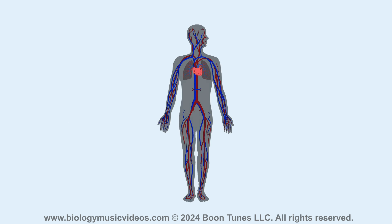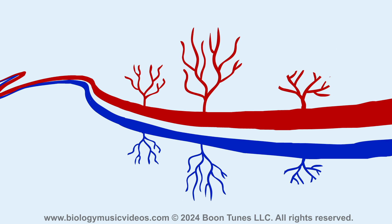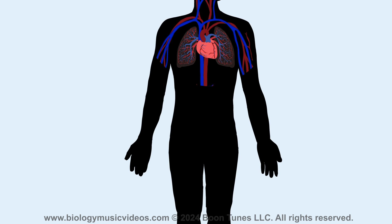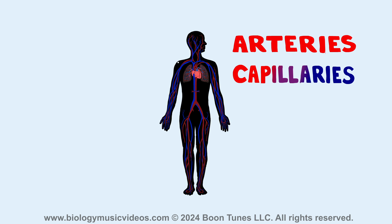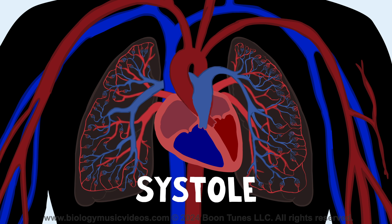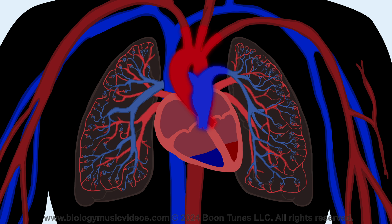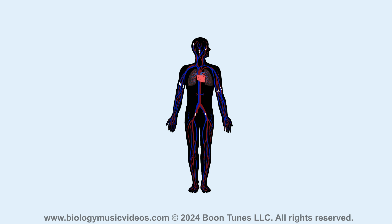Blood is a tissue all its own — the river of life is how it's known. It flows through the body in vessels named arteries, capillaries, and veins. When the heart contracts insistently, blood flows through elastic arteries. They transport blood away from the heart towards each and every body part.